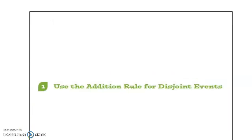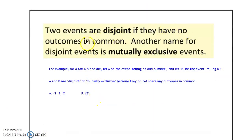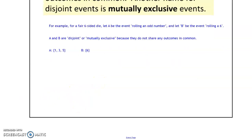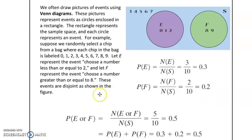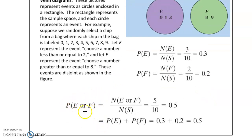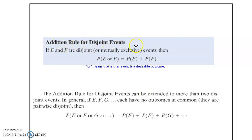The probability rules for disjoint events: disjoint events are events that have no outcomes in common. For example, A is rolling an odd number, B is rolling a 6 — A and B are disjoint or mutually exclusive because they don't share any outcomes in common. We can show that with a Venn diagram where E and F are disjoint because they don't have any overlap. We're able to figure out the probability of E or F if the two events are disjoint by simply adding them together: the probability of E plus the probability of F is 0.3 plus 0.2, which equals 0.5. This is the addition rule for disjoint events.